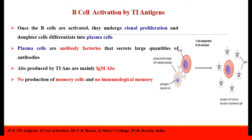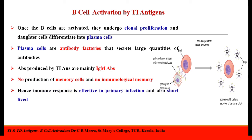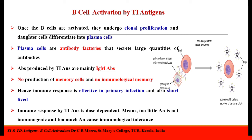Type switching to IgG can take place with the help of only T-lymphocytes. Here, there is no production of memory cells or no immunological memory. Hence, the immune response is effective in primary infection and not effective in secondary infection, and is also short-lived. Immune response by T-independent antigens is also dose-dependent — too little antigen is not immunogenic, and too much antigen can cause immunological tolerance rather than immunity.